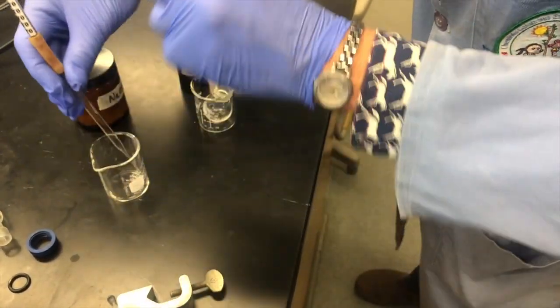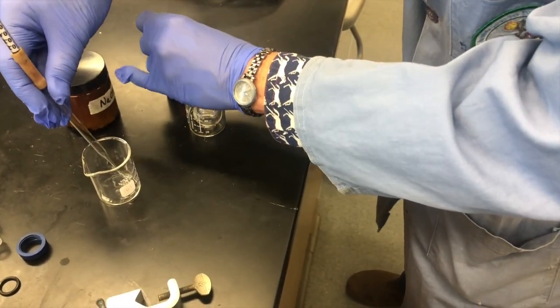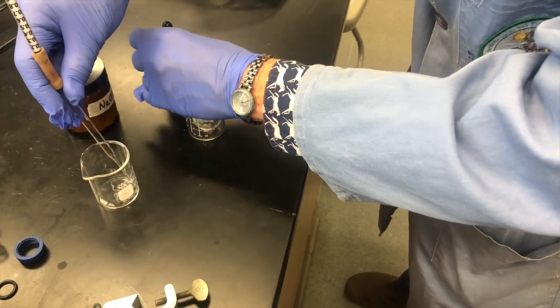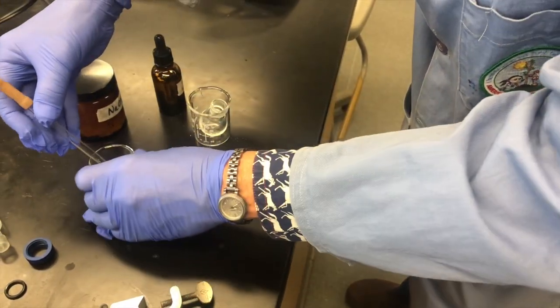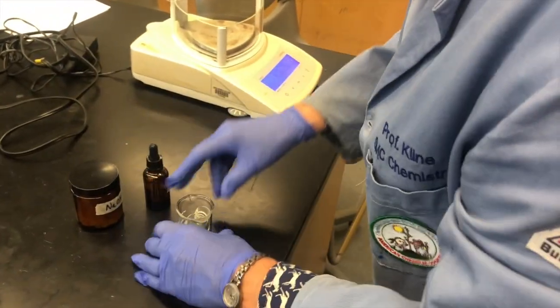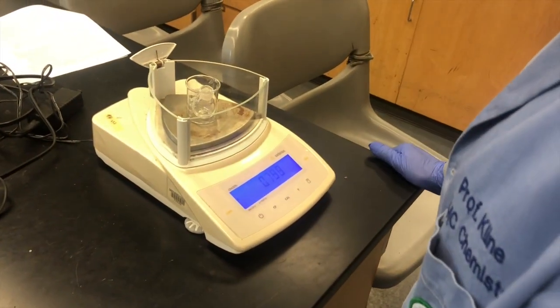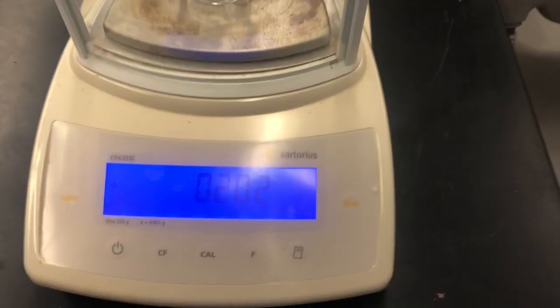The flask has been pre-teared, and so we can find out exactly how many grams we added to our flask. Record the balance mass into your lab notebook.